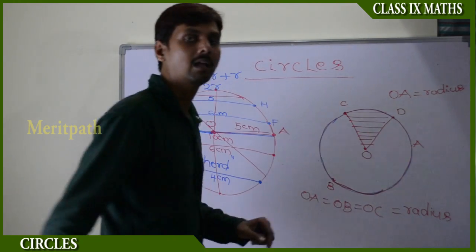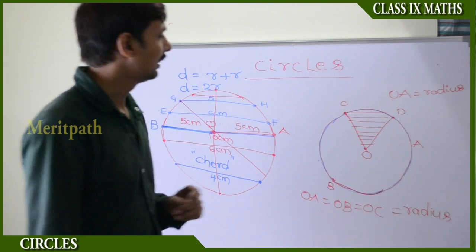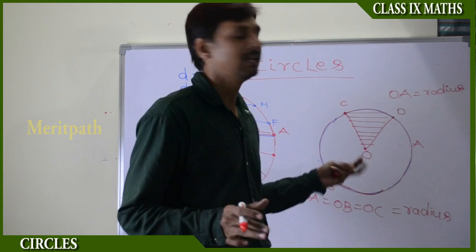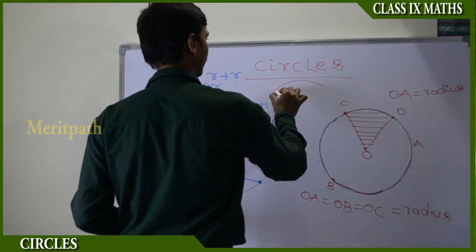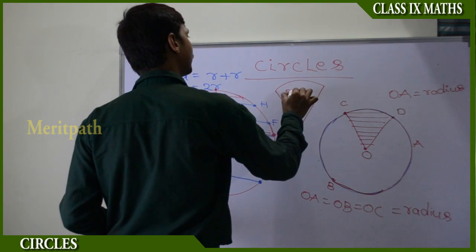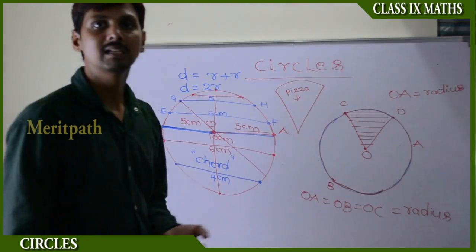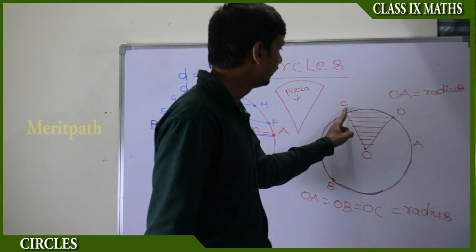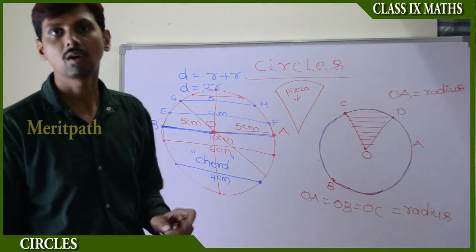A sector is like when we take a pizza and cut it into some parts and take one part — that part of the pizza is a sector of the circle. The region formed by two radii and the arc is called a sector of the circle.